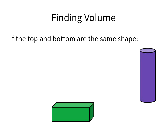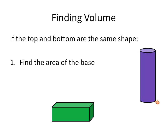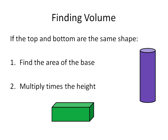In general, when you're finding the volume, if the top and the bottom of the shape are the same — so a cone would not work for this, but like a cylinder, a rectangular prism, or a cube — you would find the area of the base, whether that's a circle or a rectangle, and then multiply that times the height. That's the general rule for finding volume.